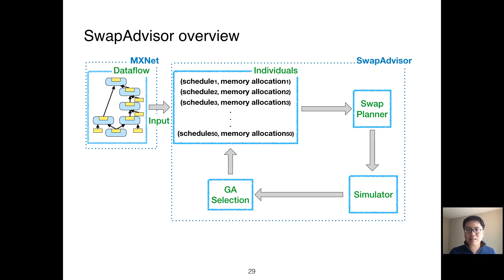Starting from the second round of search, we use crossover and mutation to create new schedules and memory allocations. Due to the time limit, we focus on how to generate a new schedule and the SwapPlanner in the rest of the talk.